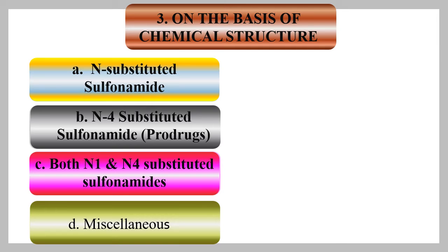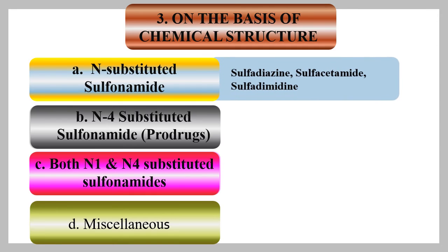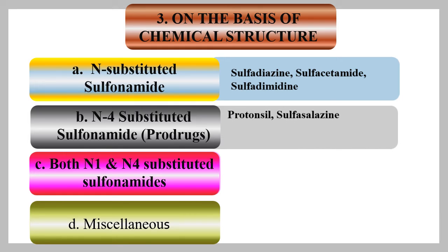On the basis of chemical structure, sulfonamides are classified into three main classes plus miscellaneous. N1-substituted sulfonamides have the N1 position substituted with different heterocyclic rings; examples are sulfadiazine, sulfacetamide, and sulfadimidine. N4-substituted sulfonamides are mainly prodrugs, such as prontosil and sulfacetamide prodrug forms.